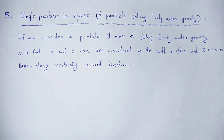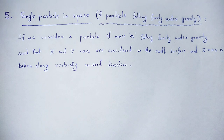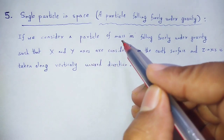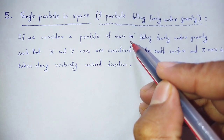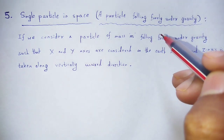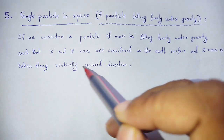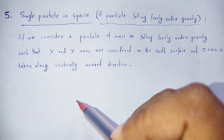Single particle in space — we are going to discuss a particle falling freely under gravity. If we consider a particle of mass m falling freely under gravity, the x and y axes are considered on the ground surface, and we are going to discuss a particle in space.